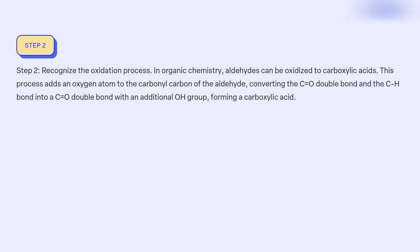Step 2: Recognise the oxidation process. In organic chemistry, aldehydes can be oxidised to carboxylic acids. This process adds an oxygen atom to the carbonyl carbon of the aldehyde, converting the C=O double bond and the C-H bond into a C=O double bond with an additional OH group, forming a carboxylic acid.